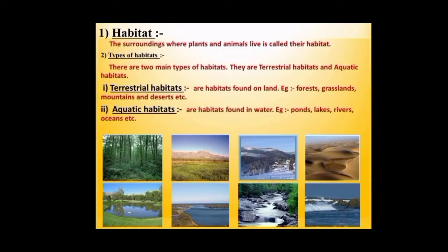There are mainly two groups of habitats: the terrestrial habitat and the aquatic habitat. Terrestrial habitats are habitats which are found on land — for example, forest, grasslands, mountains and deserts. On the other hand, aquatic habitats are habitats found basically in water, like pond, lakes, rivers, oceans, sea, etc.